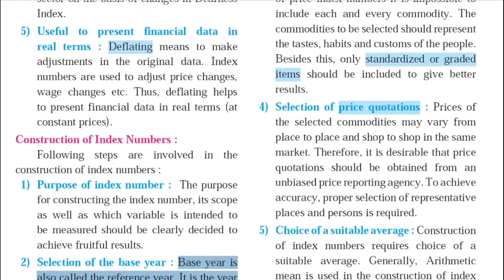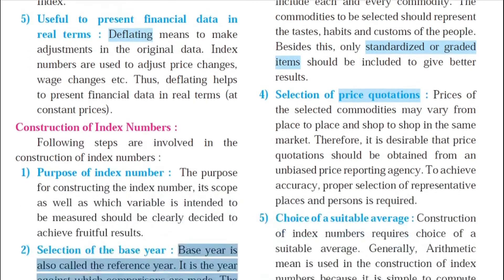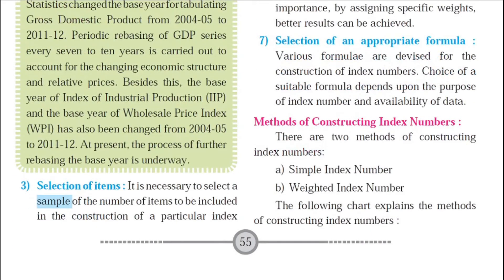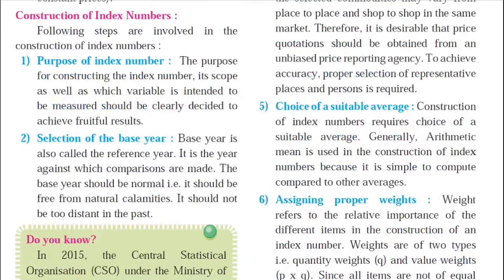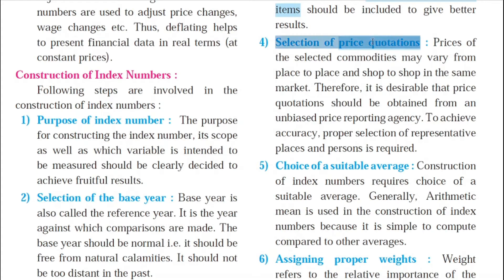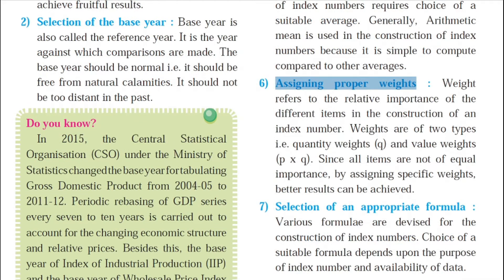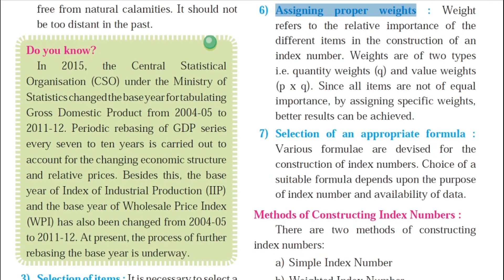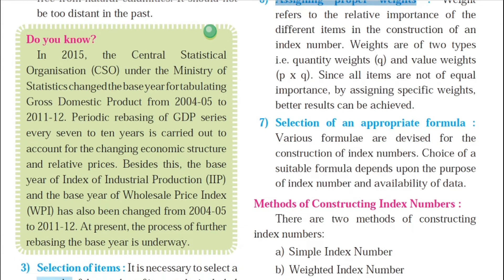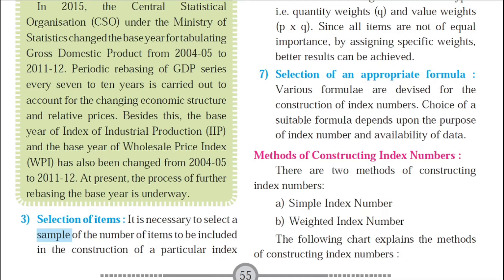On the basis of the base year, selection of items is done — that is the samples through which comparisons will be made. It is also important to make selection of price quotations, choice of suitable average, and assigning proper weights. Weight refers to the relative importance of different items in the construction of an index number. Weights are of two types: quantity weight and value weight, that is price (P) multiplied by quantity (Q). Since all items are not of equal importance, by assigning specific weights better results can be achieved. Finally, selection of an appropriate formula is important — every type of index number has a specific formula.